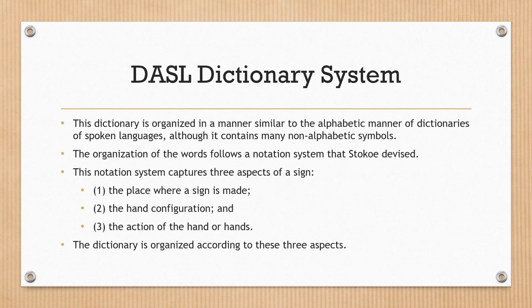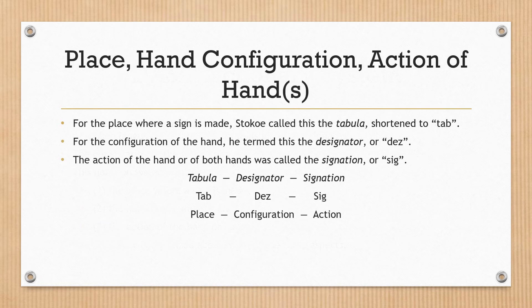DASL Dictionary System. This dictionary is organized in a manner similar to the alphabetic manner of dictionaries of spoken languages, although it contains many non-alphabetic symbols. The organization of the words follows a notation system that Stokoe devised. This notation system captures three aspects of a sign: one, the place where a sign is made; two, the hand configuration; and three, the action of the hand or hands. The dictionary is organized according to these three aspects: place, hand configuration, action of hand or hands.